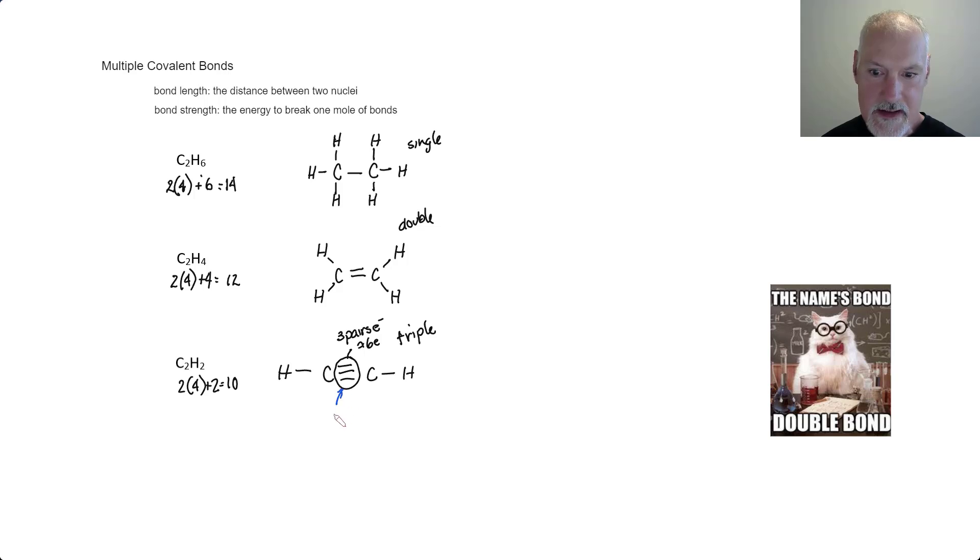This higher density of electrons results in a greater pull of the nuclei of my two carbons. They're going to be drawn more closely in here because opposites attract. And I have a considerable number of electrons to pull them in.